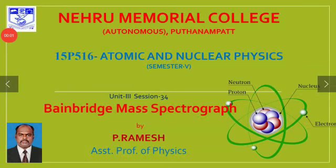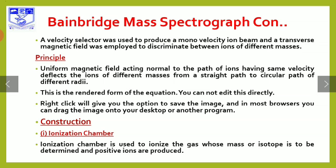Welcome to class C2. This covers the Thompson mass spectrometer, Austin mass spectrometer, Dempster mass spectrometer, and the Bainbridge mass spectrometer.